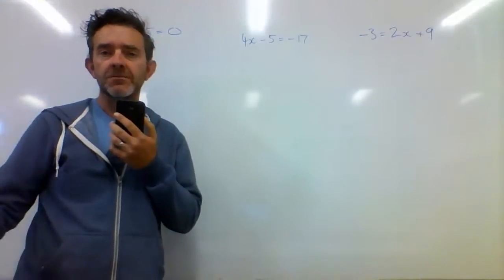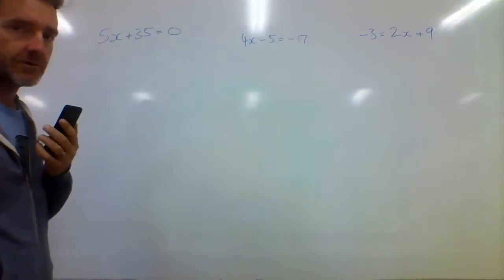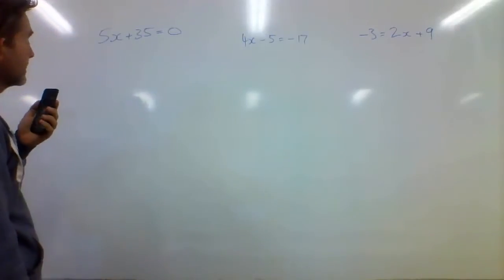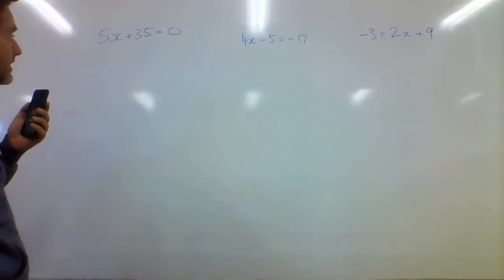They're all x. Sometimes it's y or whatever, but today we're doing it with x. So let's have a look at the first question. It is 5x plus 35 equals 0.